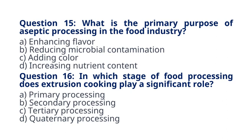Question 16. In which stage of food processing does extrusion cooking play a significant role? A. Primary processing B. Secondary processing C. Tertiary processing D. Quaternary processing. The correct answer to question 16 is option B. Secondary processing. Explanation: extrusion cooking is commonly used in secondary processing to produce a variety of food products such as snacks and breakfast cereals.